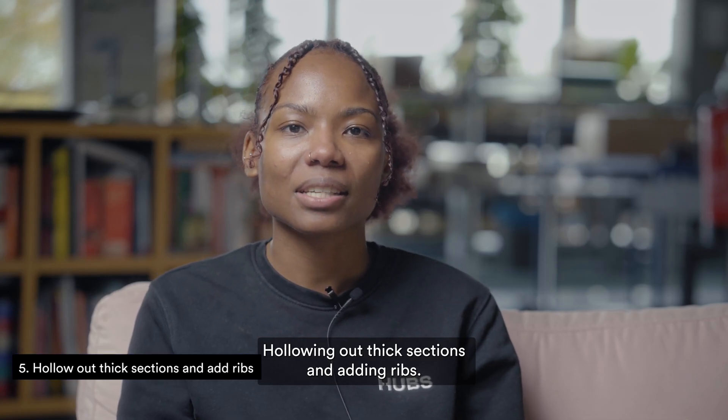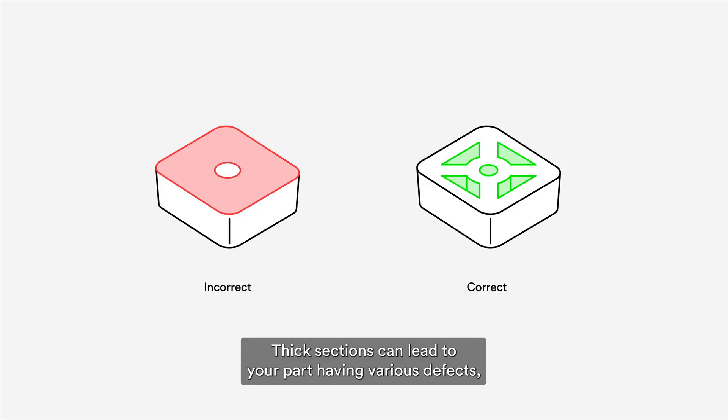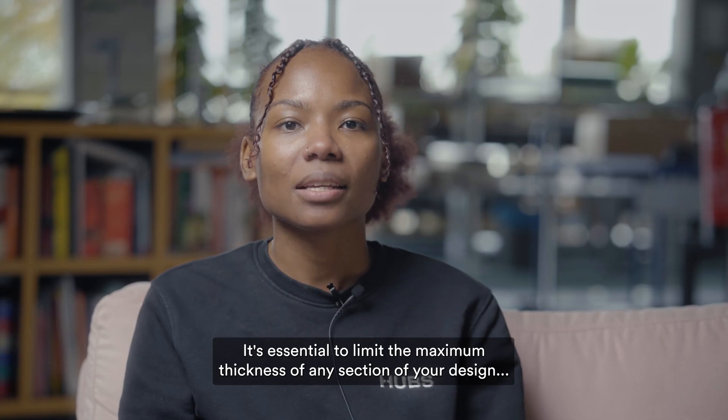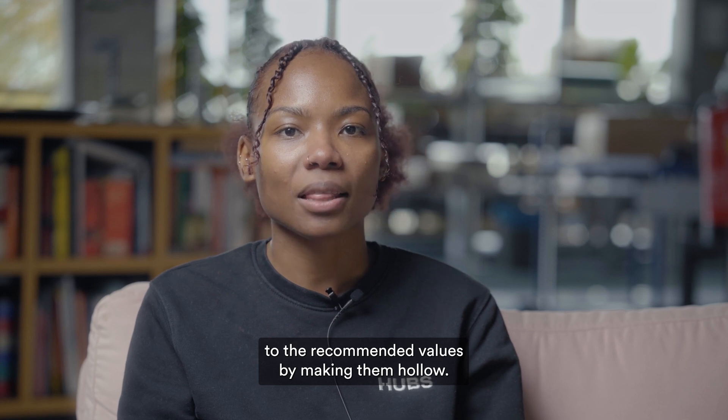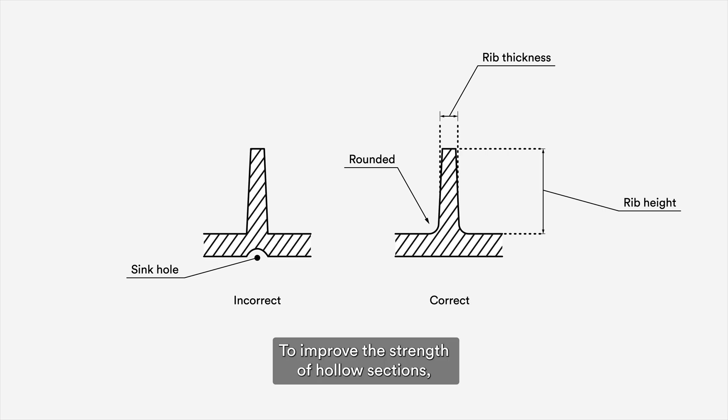Hollowing out thick sections and adding ribs. Thick sections can lead to your part having various defects, including warping and shrinkage. It's essential to limit the maximum thickness of any section of your design to the recommended values by making them hollow. To improve the strength of hollow sections, use ribs to design structures of equal strength and stiffness by reducing wall thickness.